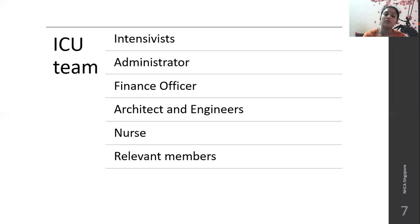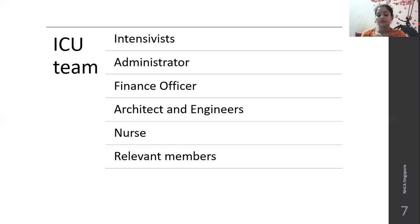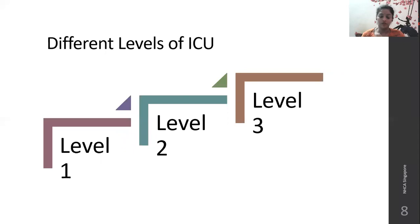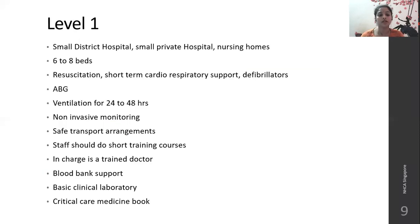The ICU team will consist of an intensivist, administrator, finance officer, architect, engineer, nurse, and other relevant members. They form the ICU team before construction. There are three different levels of ICU: level 1, level 2, and level 3. Small district hospitals, small private hospitals, and nursing homes become level 1 ICU.